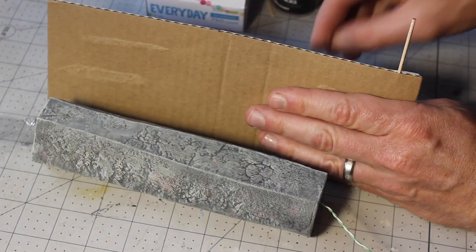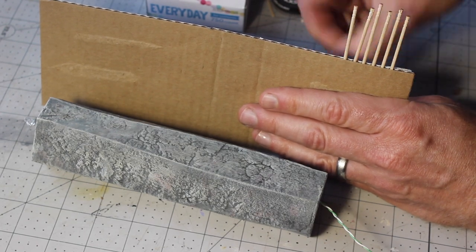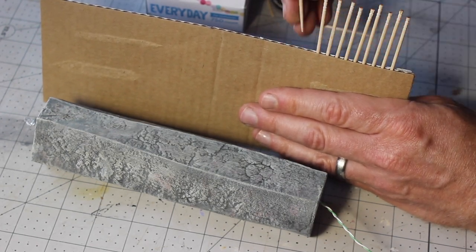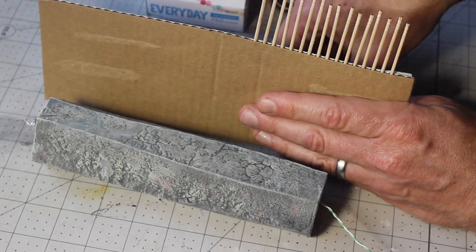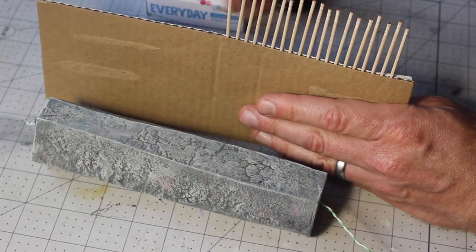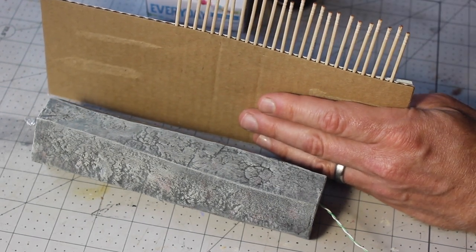For the old iron bars the dwarves pounded into the stone to hold up the steps, I used elegant toothpicks. These I placed into the corrugations of a piece of cardboard to hold them in place as I painted them with gunmetal paint.